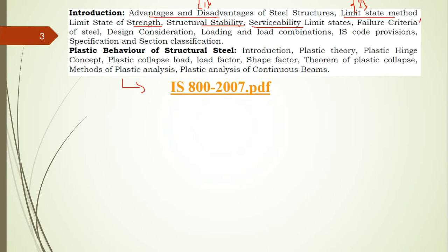Another question they might ask is the failure criteria of steel. There are four failure criteria: maximum principal stress theory, maximum principal strain theory, maximum shear stress theory, and maximum strain energy theory. These are the failure criteria of steel. Write down the points from your notes given in the classroom session.